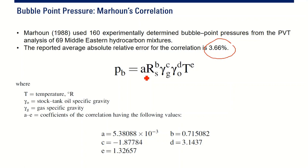Bubble point pressure is A multiplied by gas solubility powered by B, multiplied by this one powered by C, and oil gravity and temperature. You can just look at the correlation and you can calculate.